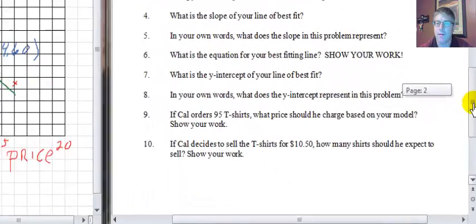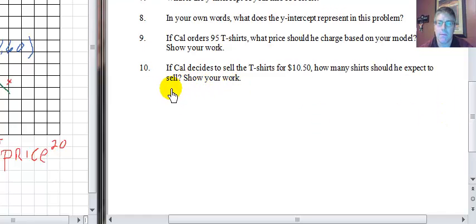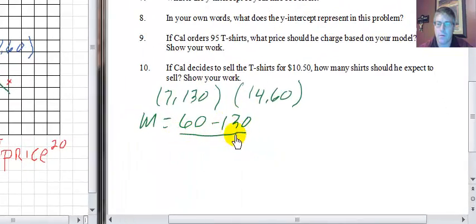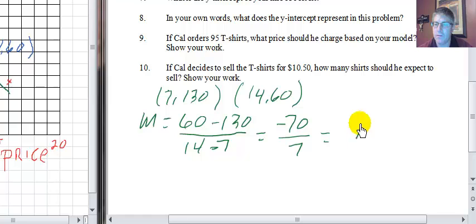I'm going to use the ordered pairs 14, 60, and I'm going to use the ordered pair 7, 130. I'm going to use those two ordered pairs to come up with the equation of our line. My two points are 7, 130 and 14, 60. We calculate our slope: 60 minus 130 over 14 minus 7. So 60 minus 130 is negative 70 over 7, which is negative 10 over 1.